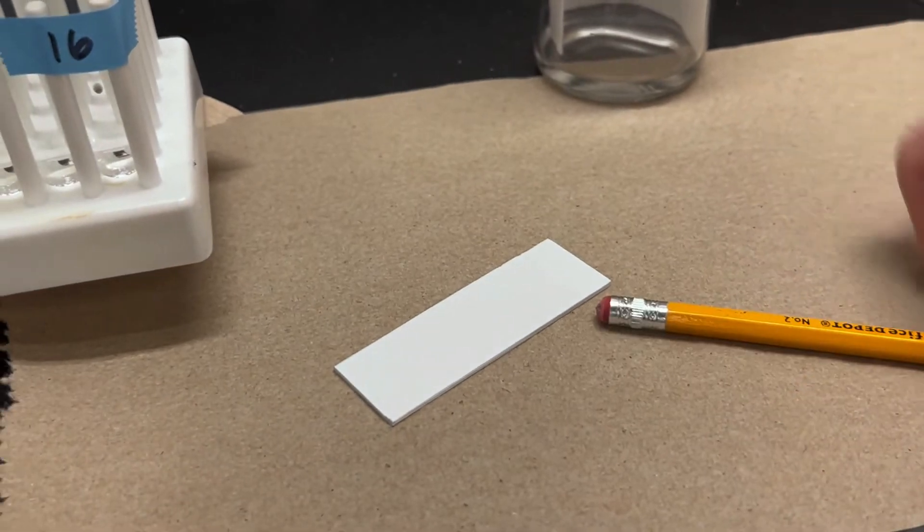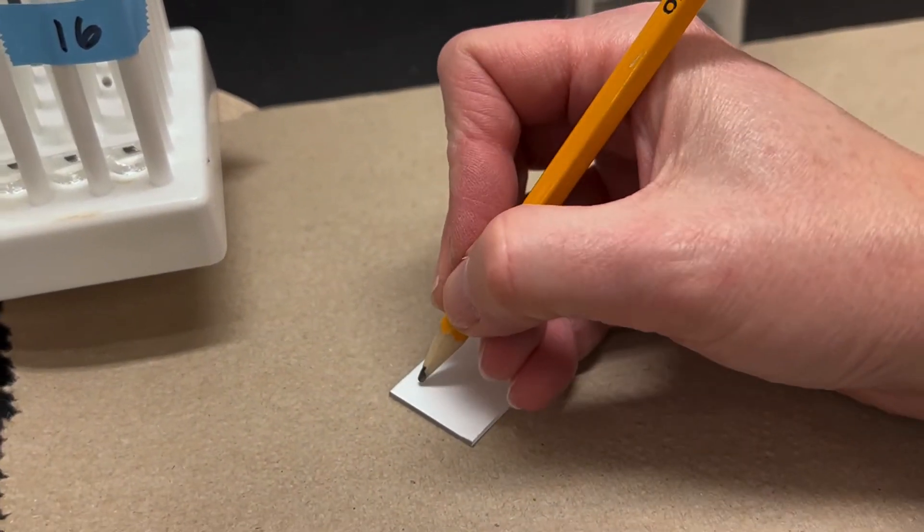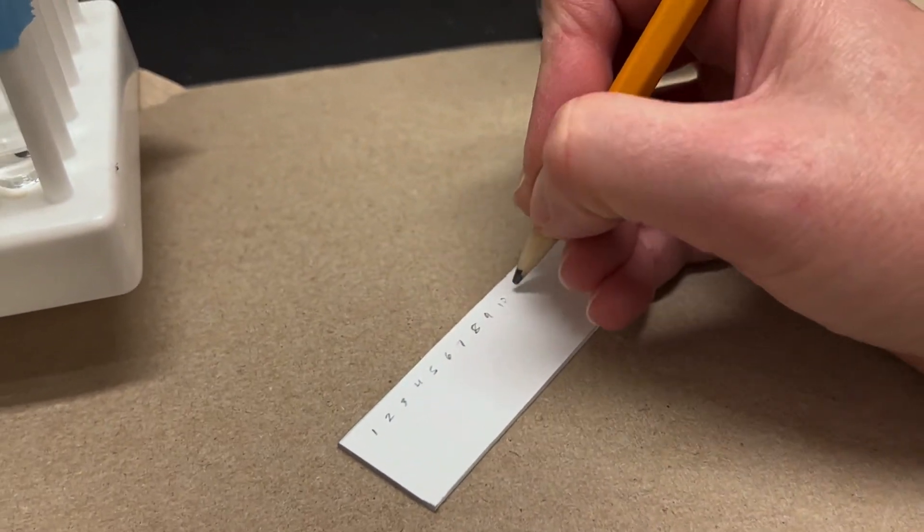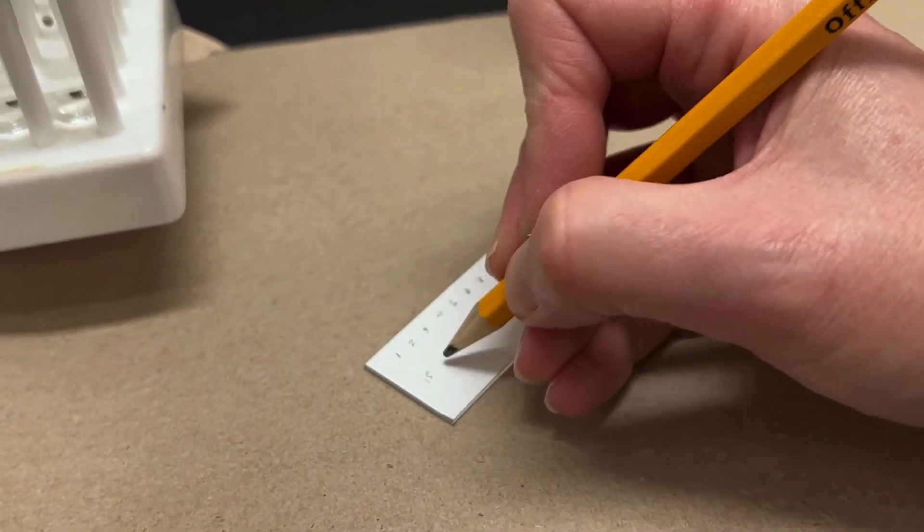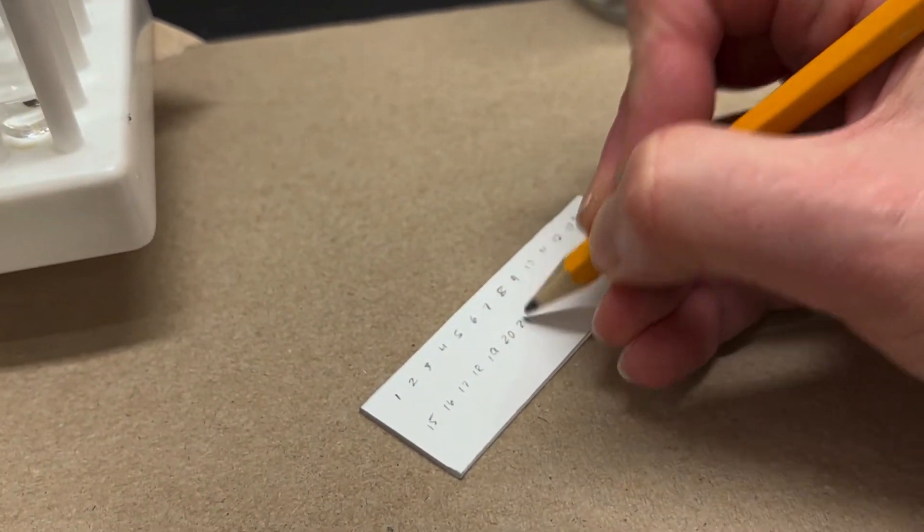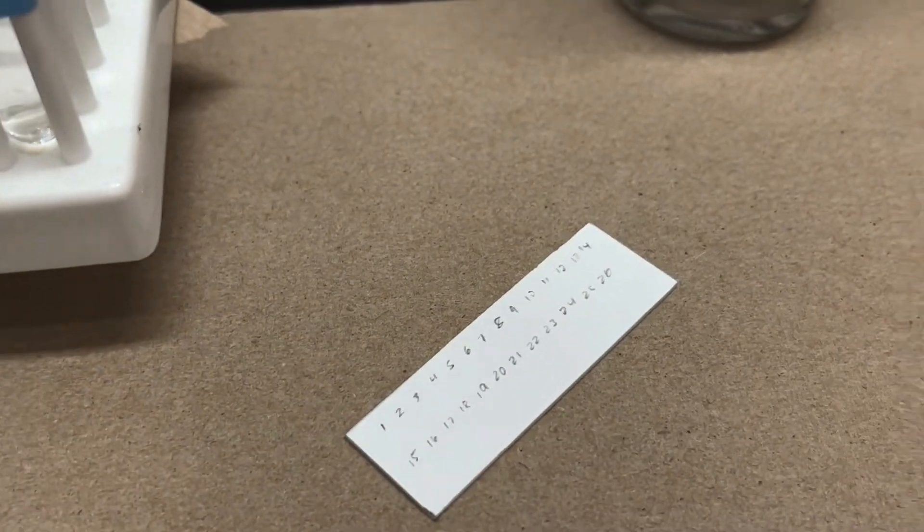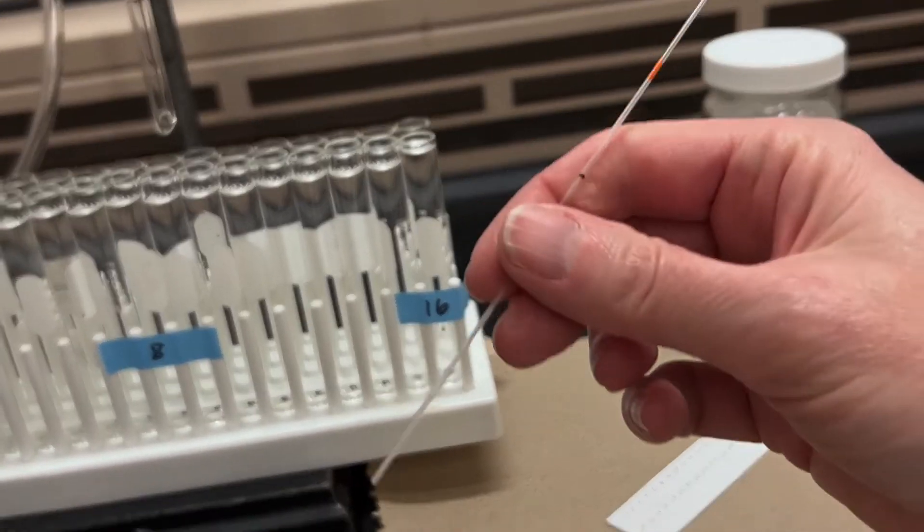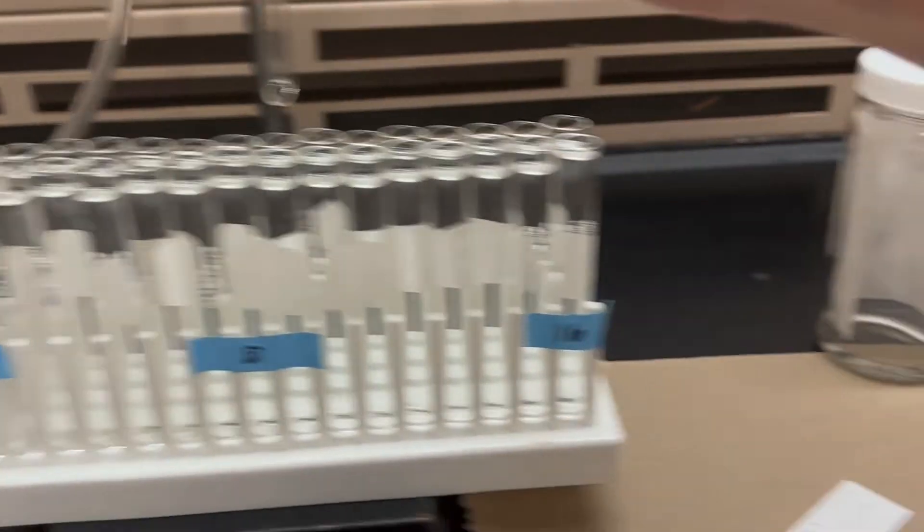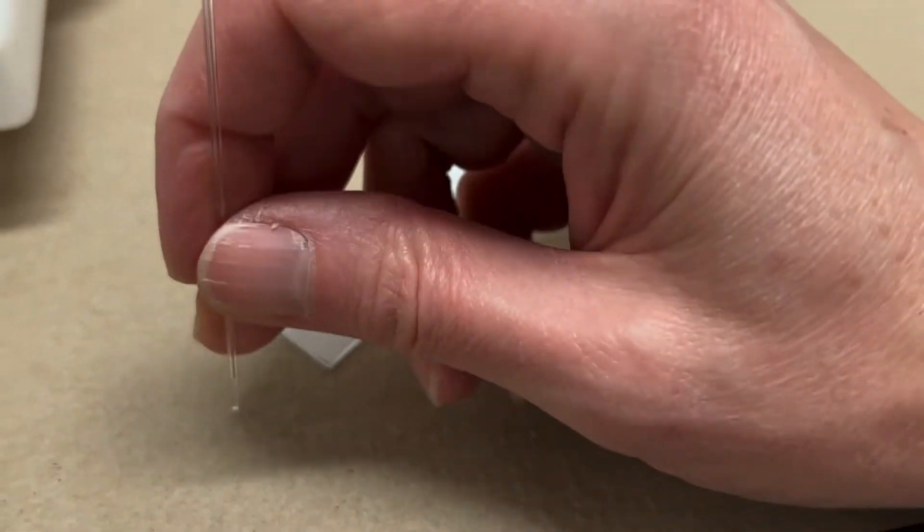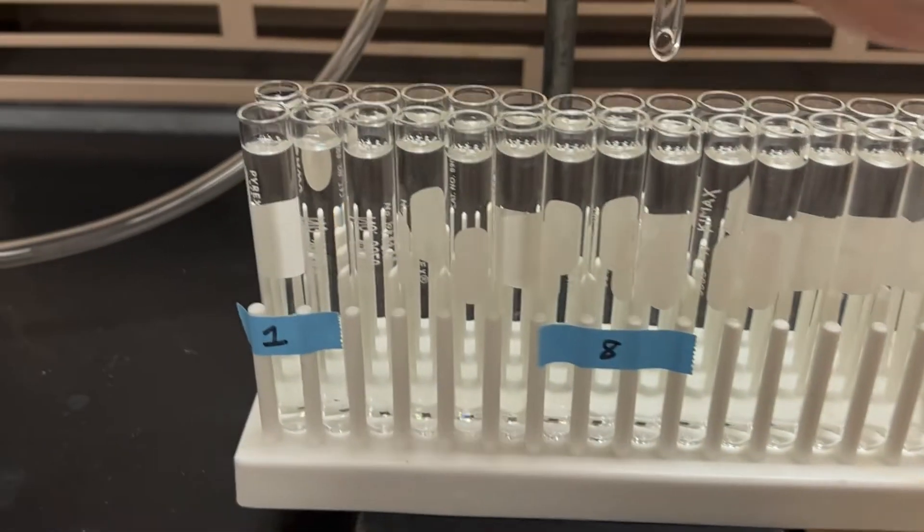So on the TLC plate, then you want to write a bunch of numbers real close to each other, one, two, three, four, five. And this is going to represent a spot on the TLC plate where you're going to spot a small sample of each of the fractions. So take a capillary tube and stick that into the first test tube, and then spot that sample onto the first position of the TLC plate. And you're just going to repeat that for all of the fractions.